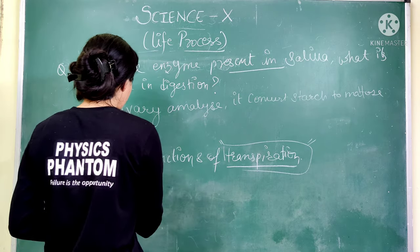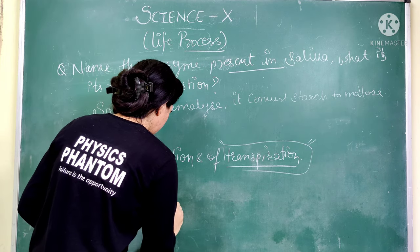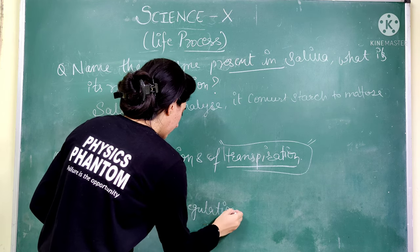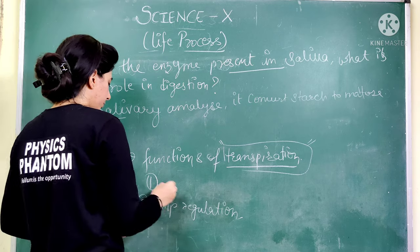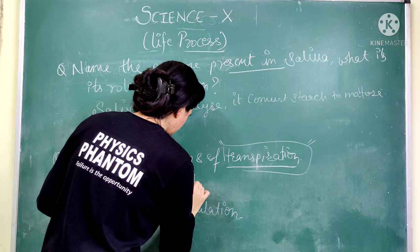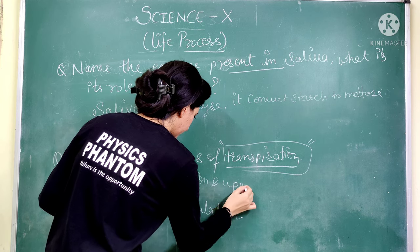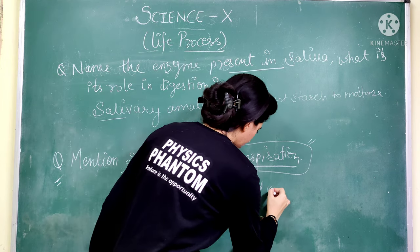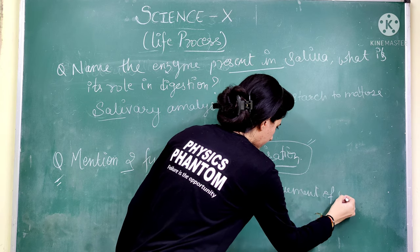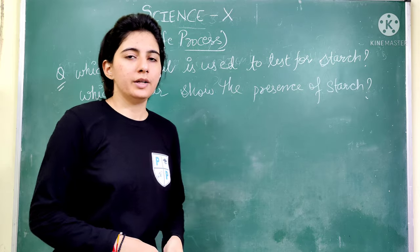The second function of transpiration is temperature regulation. Transpiration helps in temperature regulation. These are two important points: water absorption and upward movement of water and minerals. Now the next question.